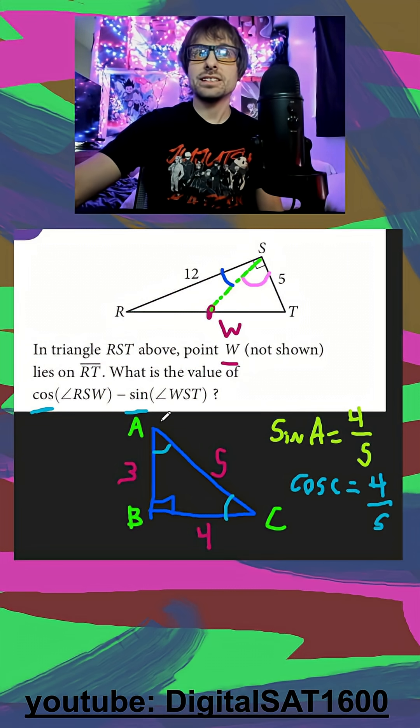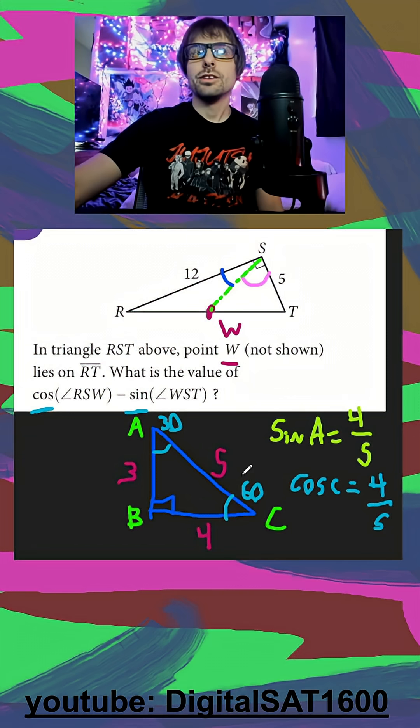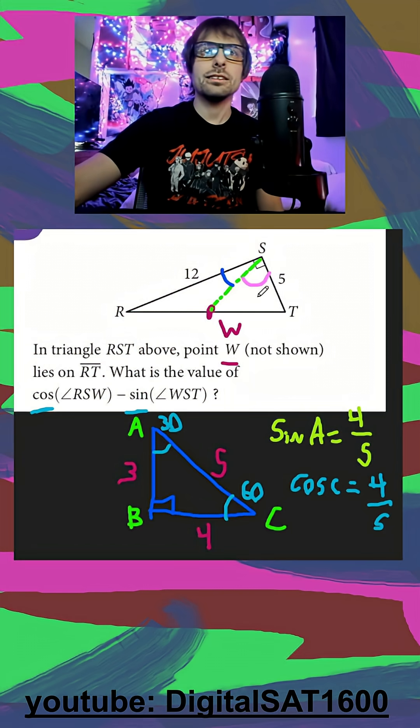So the sine of this angle, say this is 30, is going to be equal to the cosine of its complement, which is whatever adds up to 90. So that's what they kind of sneakily did here.